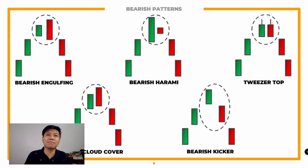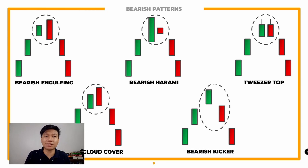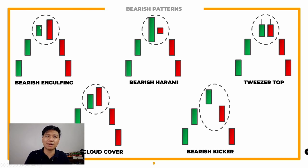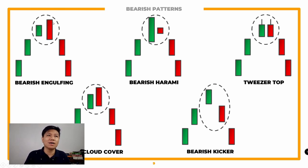Meron din tayong mga bearish patterns — halos kabaliktaran rin lang ng bullish patterns. First off, meron tayong bearish engulfing. Ito rin yung mga mahabang red candlestick na naka-downtrend — sobrang lakas ng selling pressure. If the price is going uptrend and humina na rin yung buying pressure, usually maliit lang ang previous candlestick. Tapos makakita ka ng mahabang pula — that is a very strong signal na naka-downtrend na siya.